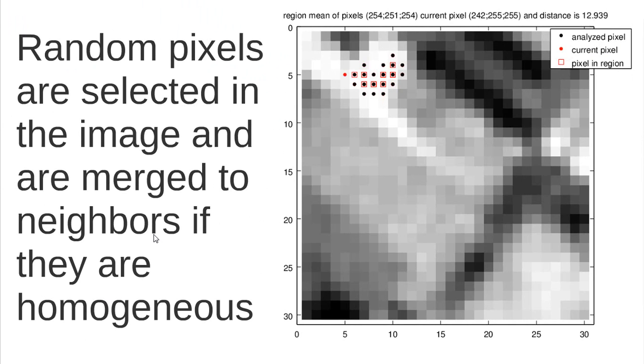And so here I provide a very simple example of a rectangular grid. Suppose this is a part of our image. The region growing approach does exactly like this: it selects random pixels in the image and also merges them if the pixel and its neighbors are homogeneous.